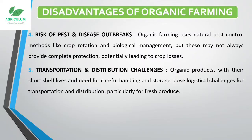The fifth disadvantage is transportation and distribution challenges. Organic products, with their short shelf life and need for careful handling and storage, pose logistical challenges for transportation and distribution, particularly for fresh produce.